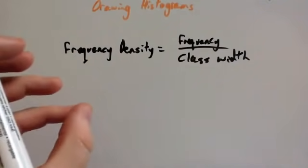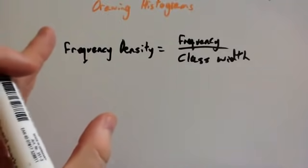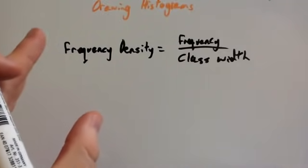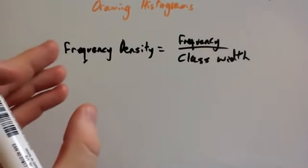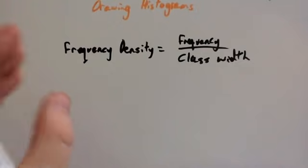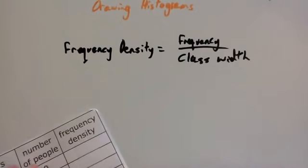Remember, the reason that we're drawing histograms is that the data we're going to be looking at will have unequal class widths. So that means we've got to work out the frequency density. That's so that you can compare the frequencies for categories that have got different class sizes, class widths.